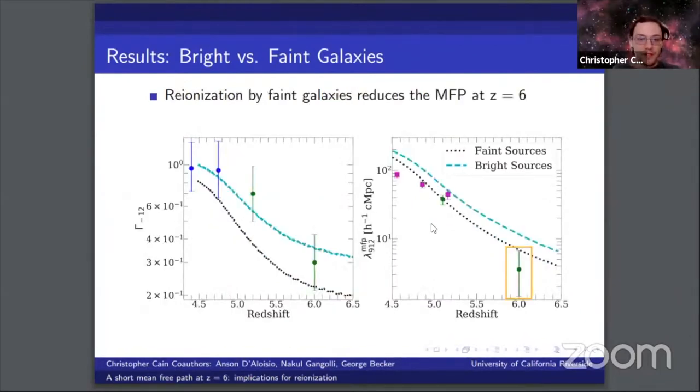Our conclusion from this comparison is that reionization by faint galaxies reduces the mean free path at all redshifts compared to reionization by bright sources, particularly at redshift 6.